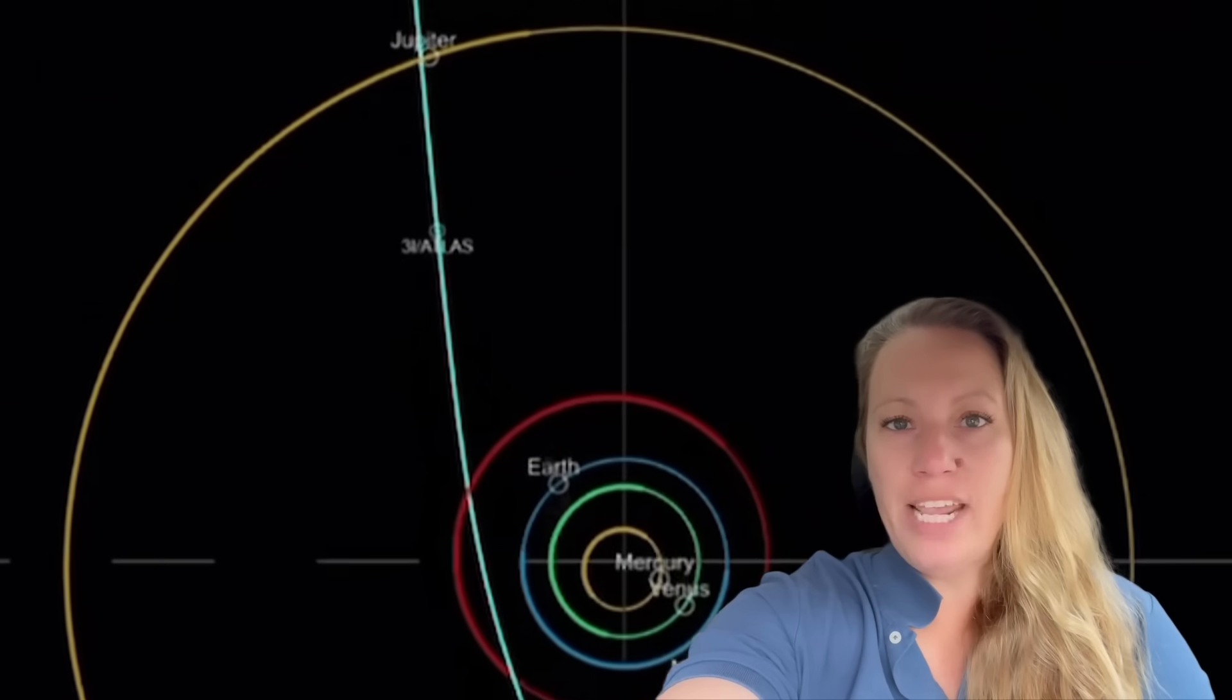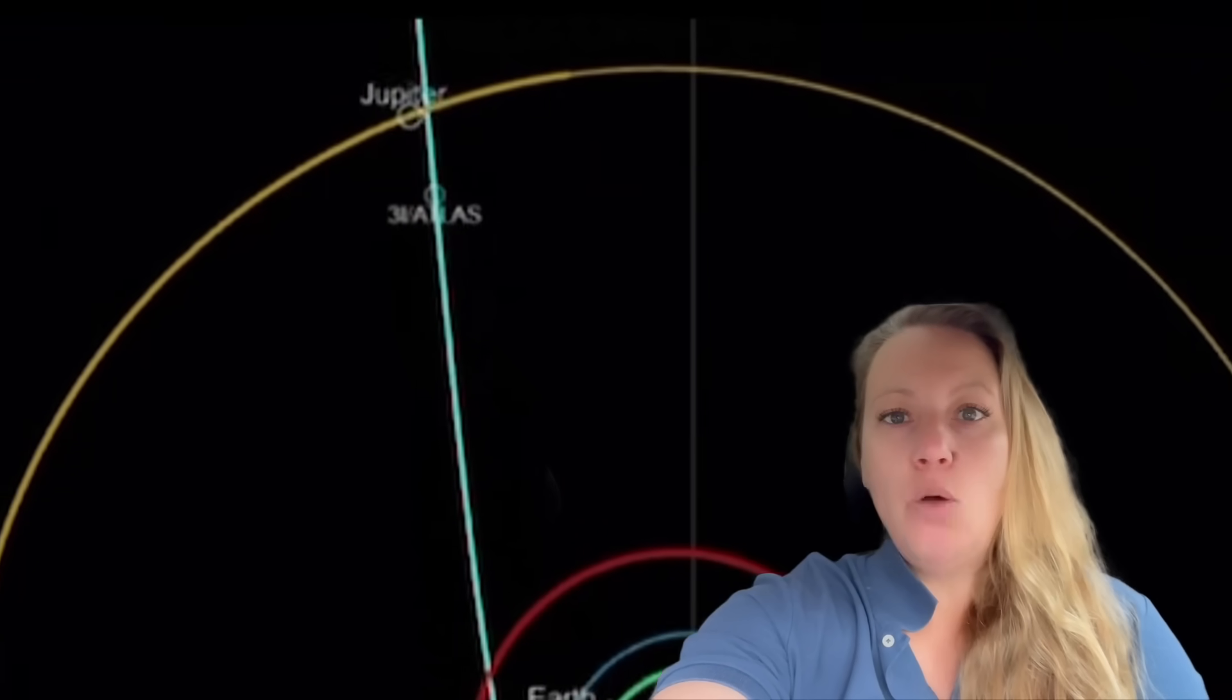3i Atlas has changed course and it's headed right to Jupiter. Can that be a coincidence? And it did that while it was in perihelion, hidden from Earth, hidden from our sight.